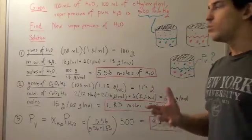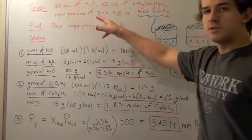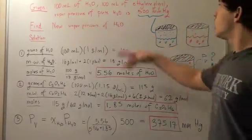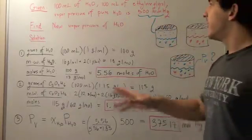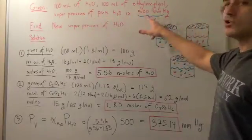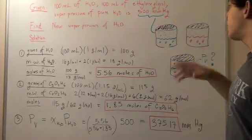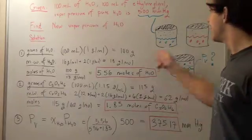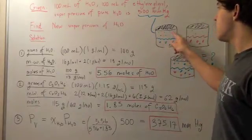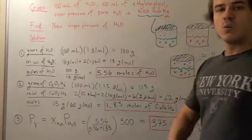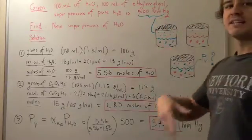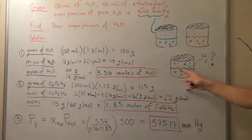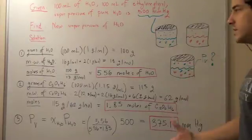In this example, we begin with 100 mL of water found in this container and 100 mL of ethylene glycol found in this container. We're told that the vapor pressure of pure water is 500 mmHg — that is the pressure exerted by the gas molecules. What we want to do is mix these two containers and then find the vapor pressure of water, the pressure exerted by the water molecules on the walls of the container.